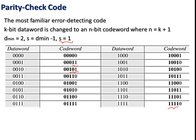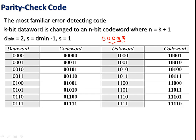As parity check can find only one error, consider an example: if all zeros are transmitted and one bit is changed, the receiver finds this code word is not in the dictionary and discards it. However, if two bits are changed — for example, instead of five zeros the receiver gets 00011 — this is already in the valid code word list. The receiver cannot detect the error and incorrectly thinks the data word is 0001 instead of 0000.